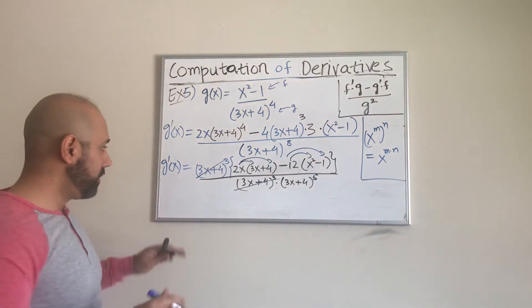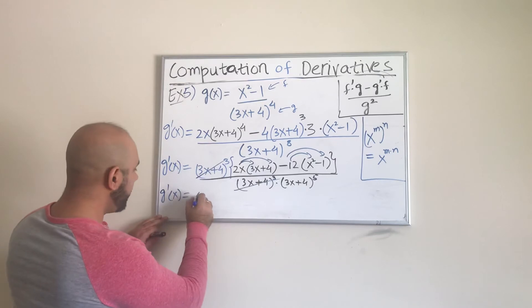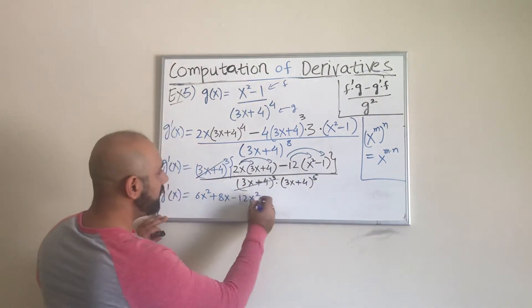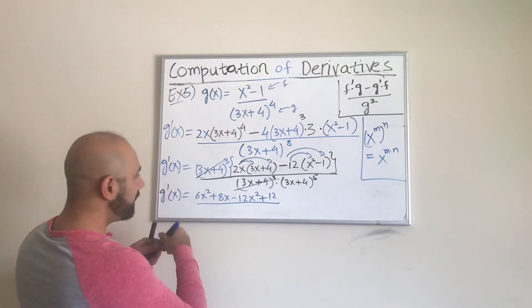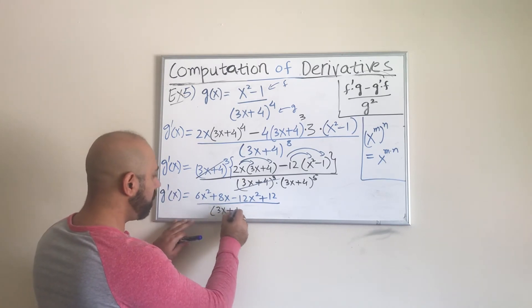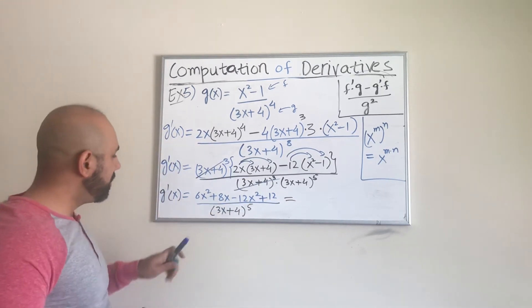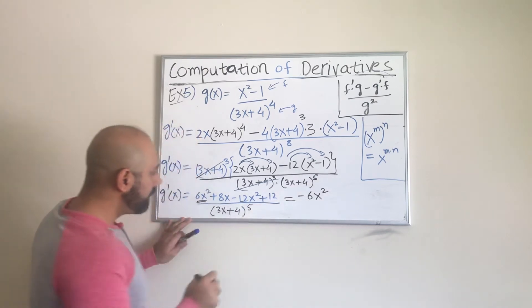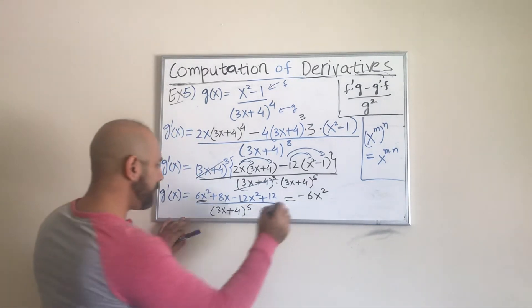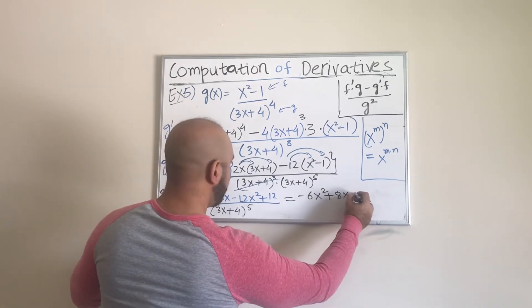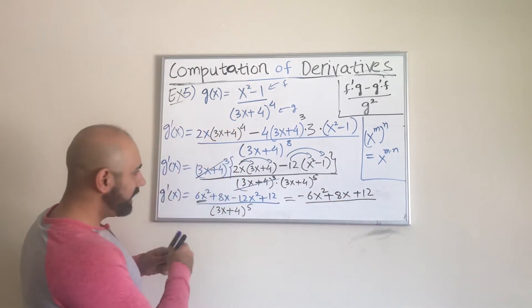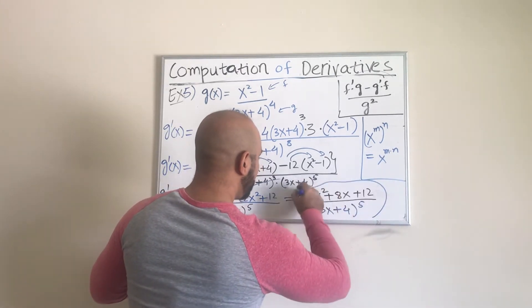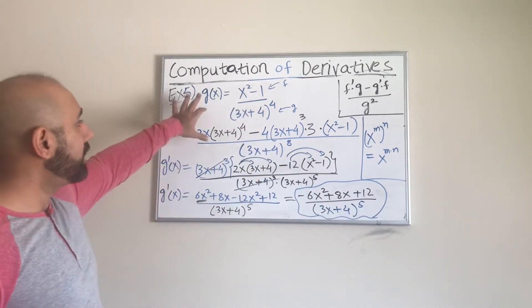Distributing and combining like terms: we get 6x², then plus 8x, then minus 12x², and negative 12 times negative 1 gives positive 12. This whole expression is divided by (3x + 4) raised to the power 5. Combining the like terms 6x² and −12x² gives −6x². So the final derivative is (−6x² + 8x + 12) divided by (3x + 4)⁵.